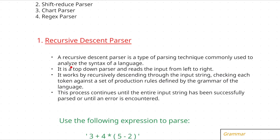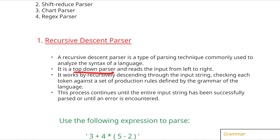It is a top-down parser and reads the input from left to right. I discussed top-down and bottom-up parsers in the phrase structure graph topic — top-down is indicated with a down arrow, bottom-up with an up arrow. It works by recursively descending through the input string, checking each token against the set of production rules defined by the grammar of the language.